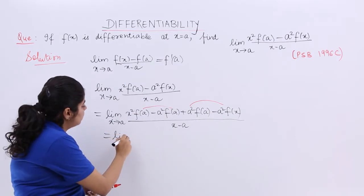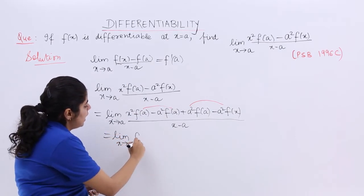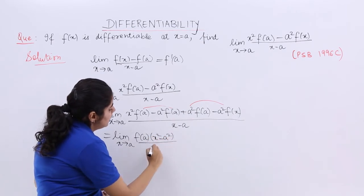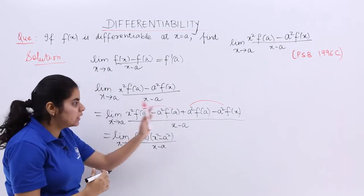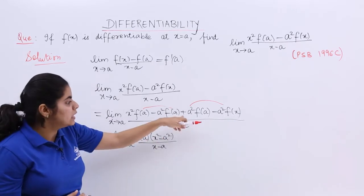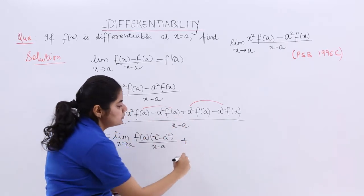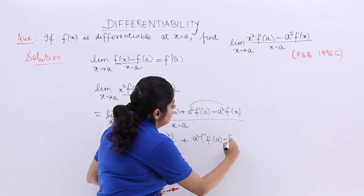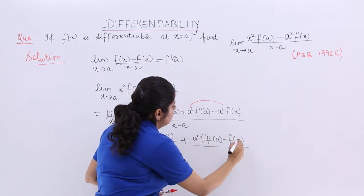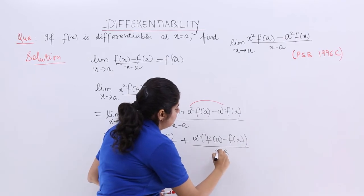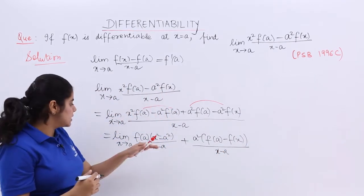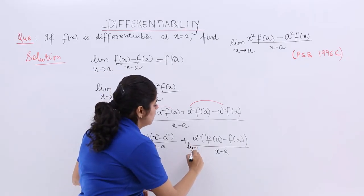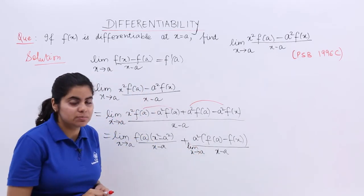So the next step is limit x tends to a, f(a) is common. It is (x² - a²)/(x - a). Let me separate the denominator with the different terms. Then it is plus a² common, inside is [f(a) - f(x)]/(x - a), and limit can always be taken separately. It is limit x tends to a here. Here also we can take limit x tends to a.